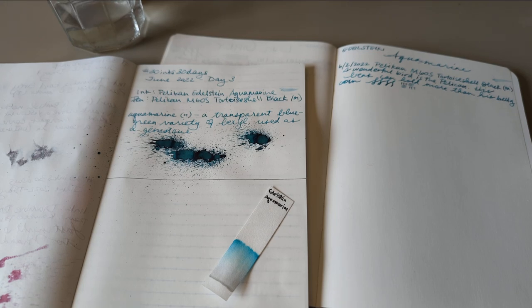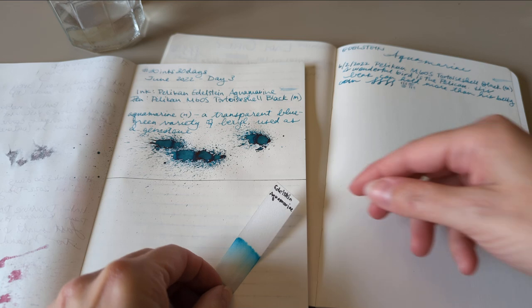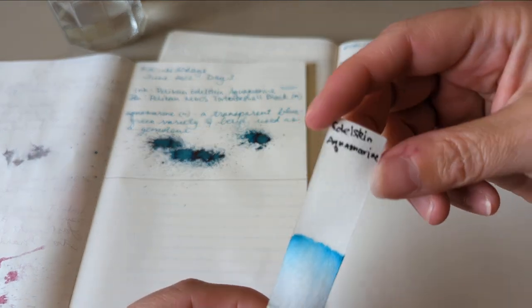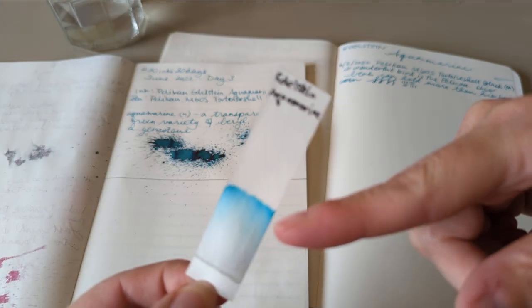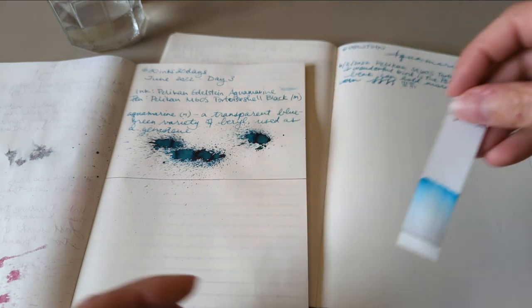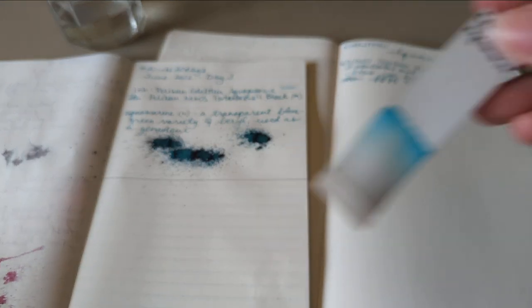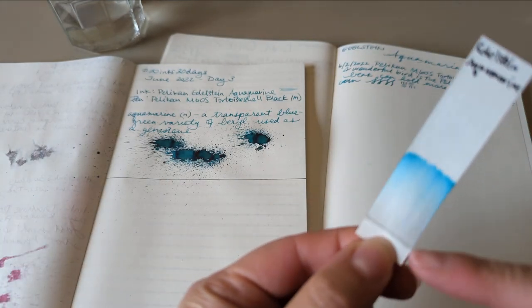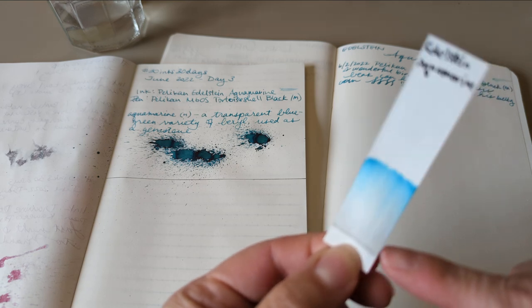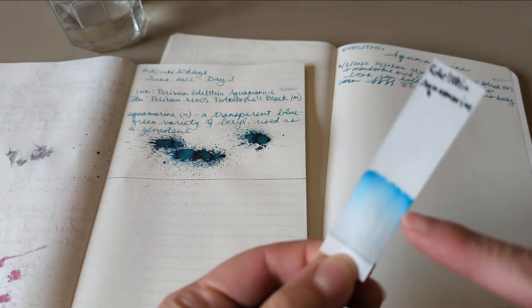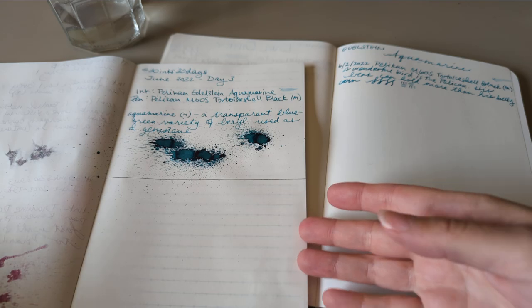Hi friends, welcome to day four of 30 inks in 30 days. So yesterday we did Edelstein Aquamarine, here's that. This again comes out looking far bluer on camera. That's the chromatography, interesting. You see a little bit of gray, greeny gray, and then this is a teal.